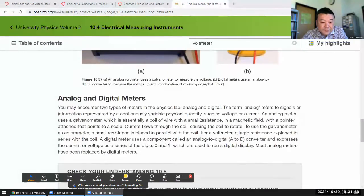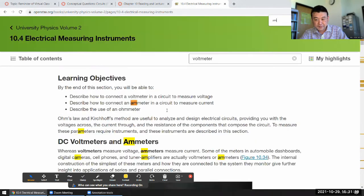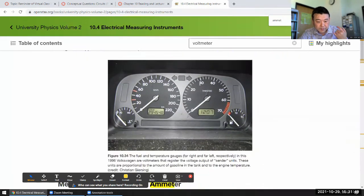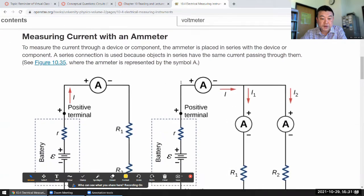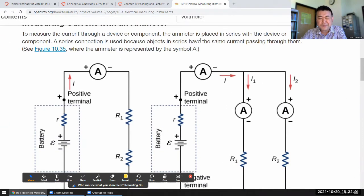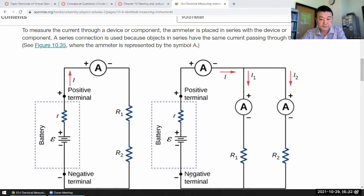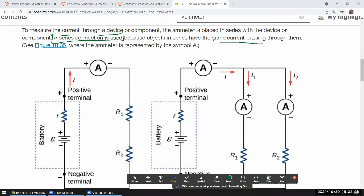Let's find the ammeter. Do they have ohmmeters? There's a DC voltmeter and ohmmeters. Ohmmeters measure current. Here it is - measuring current with an ammeter. To measure current through a device or component, an ammeter is placed in series with the device or component. A series connection is used so that same current passes through them.